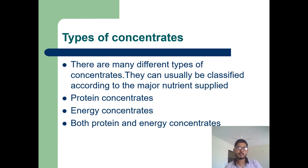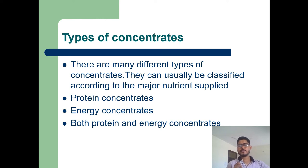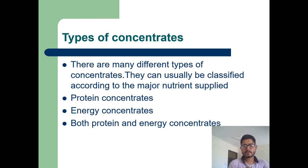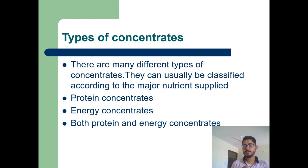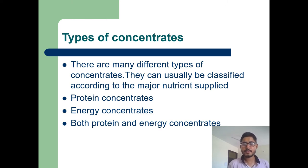There are many different types of concentrates, and they can usually be classified according to the major nutrient they supply. Some are protein concentrates, some are energy concentrates, and some are both protein and energy concentrates. In protein concentrates the protein content is high; in energy concentrates the energy content is high; and in combined concentrates, both nutrients are high.